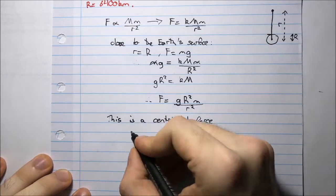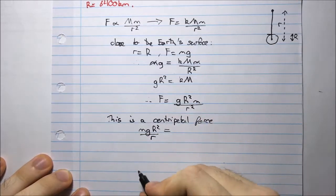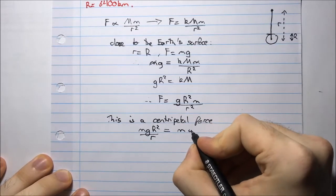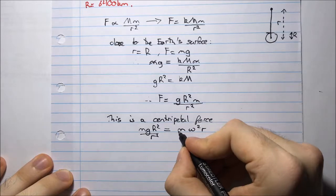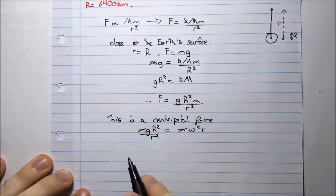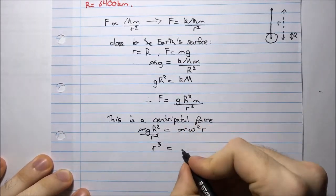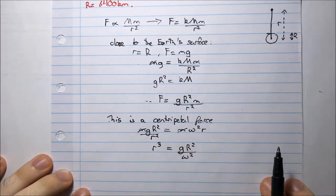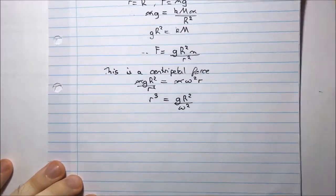So what can I say now? I can say that m g R squared divided by r squared is equal to the expression for a centripetal force, which is m omega squared r. I can get rid of these m's. I can get an expression for little r. r cubed equals g R squared divided by omega squared. Why am I looking for little r? Because I'm trying to determine the height.